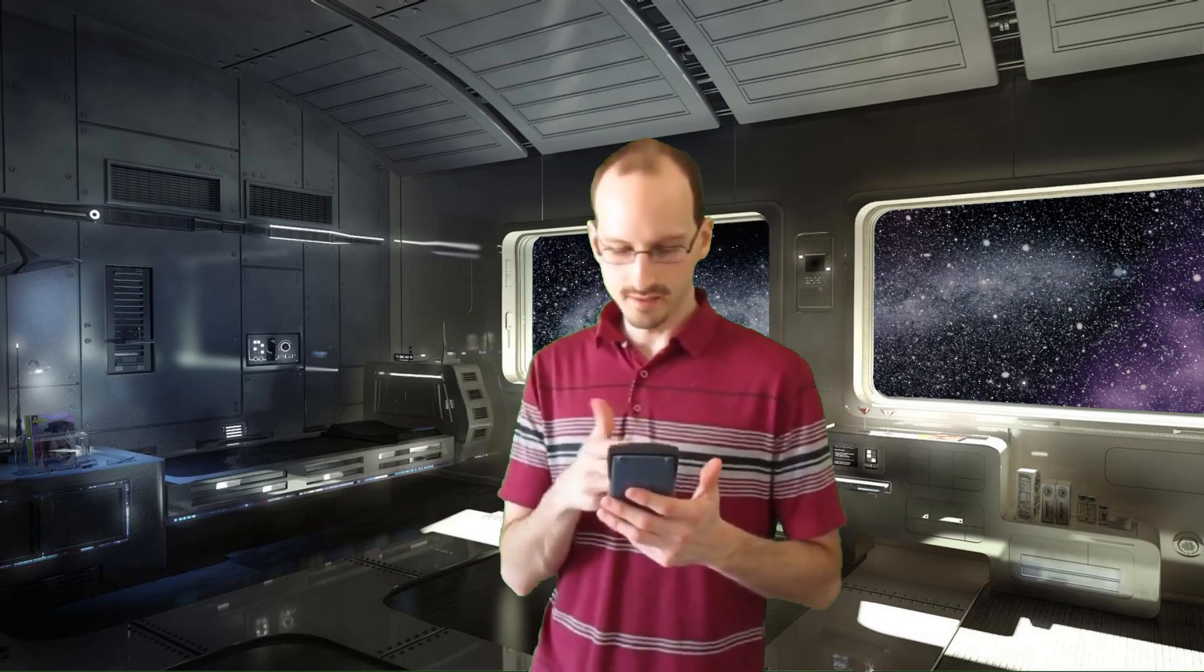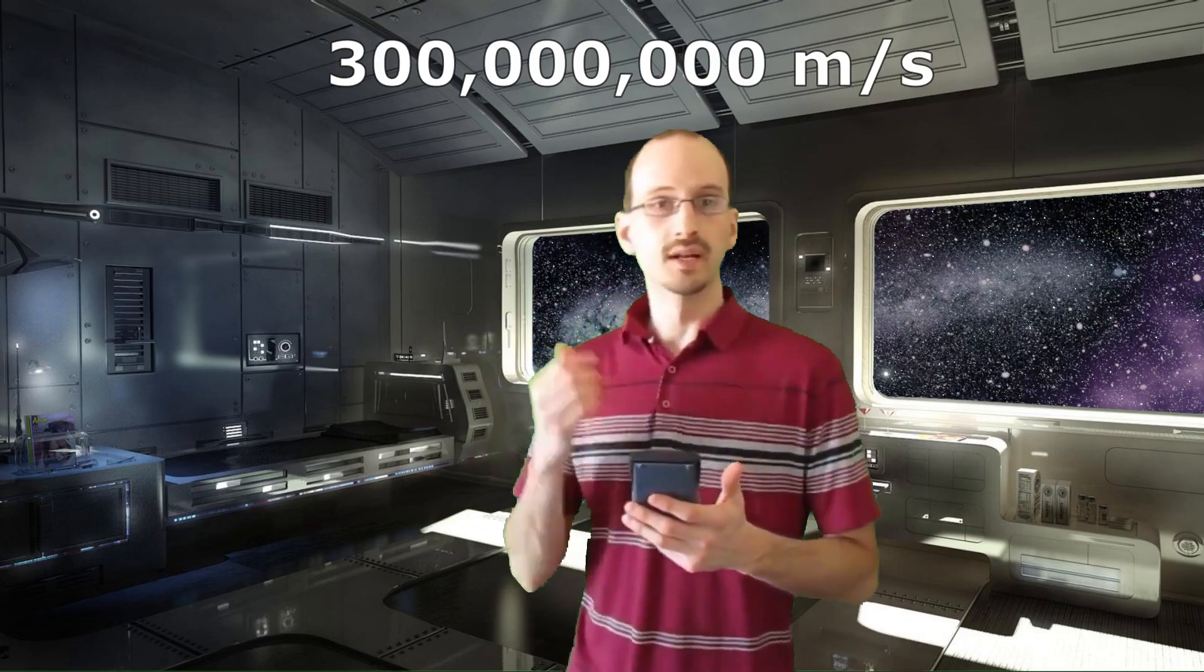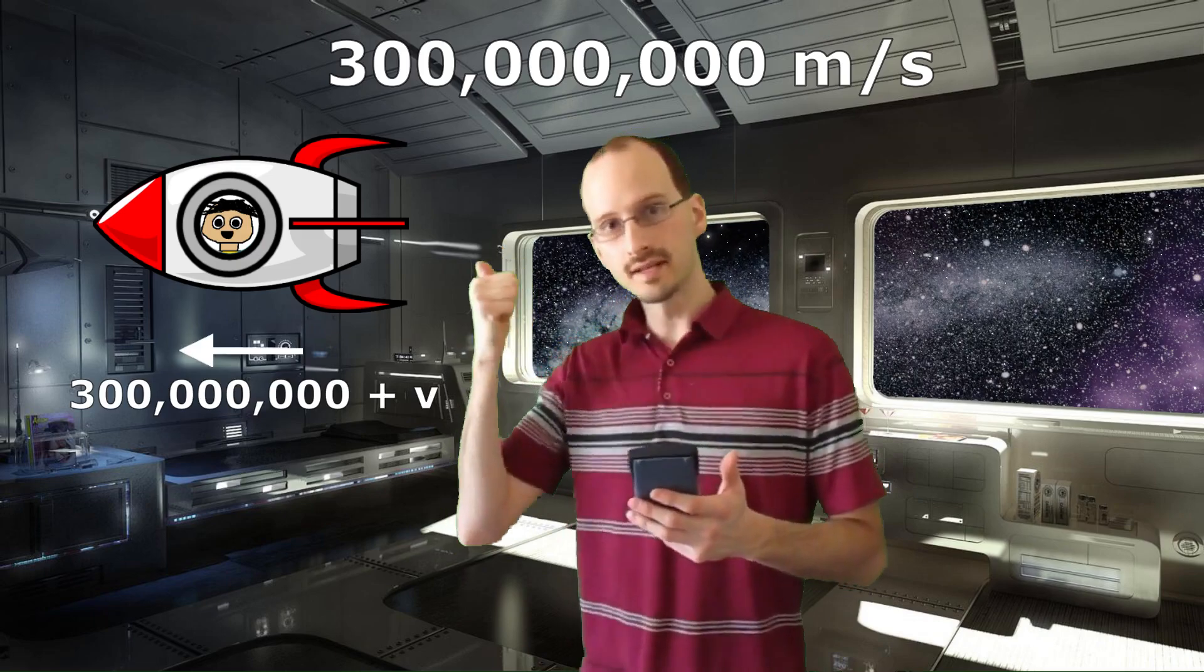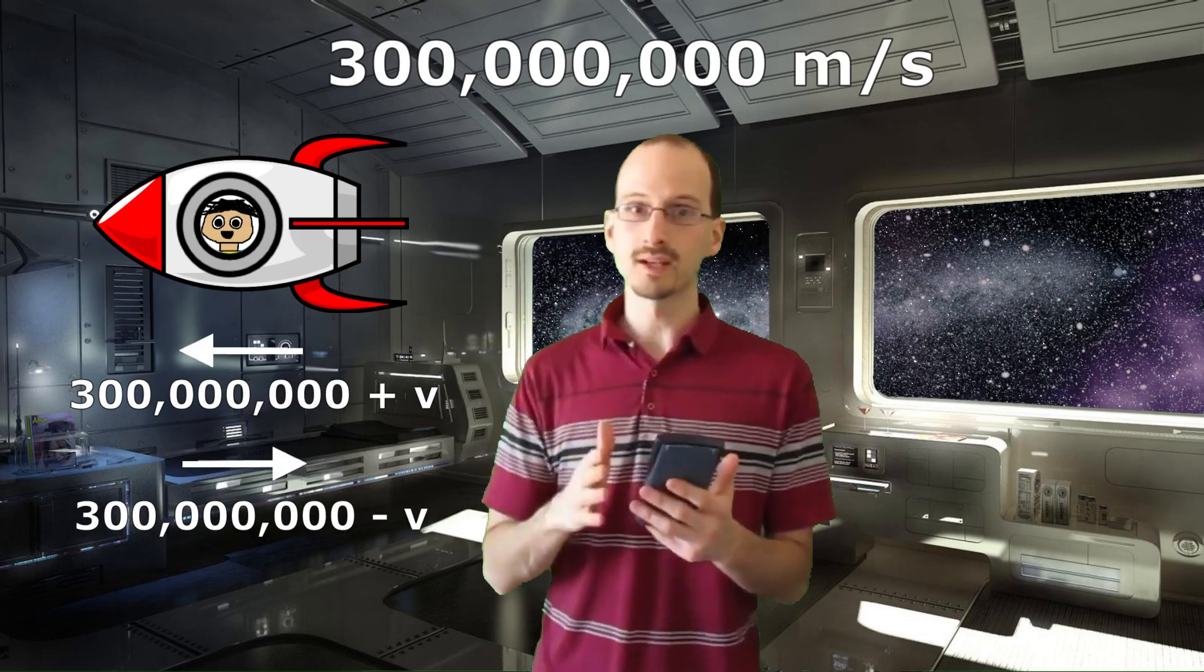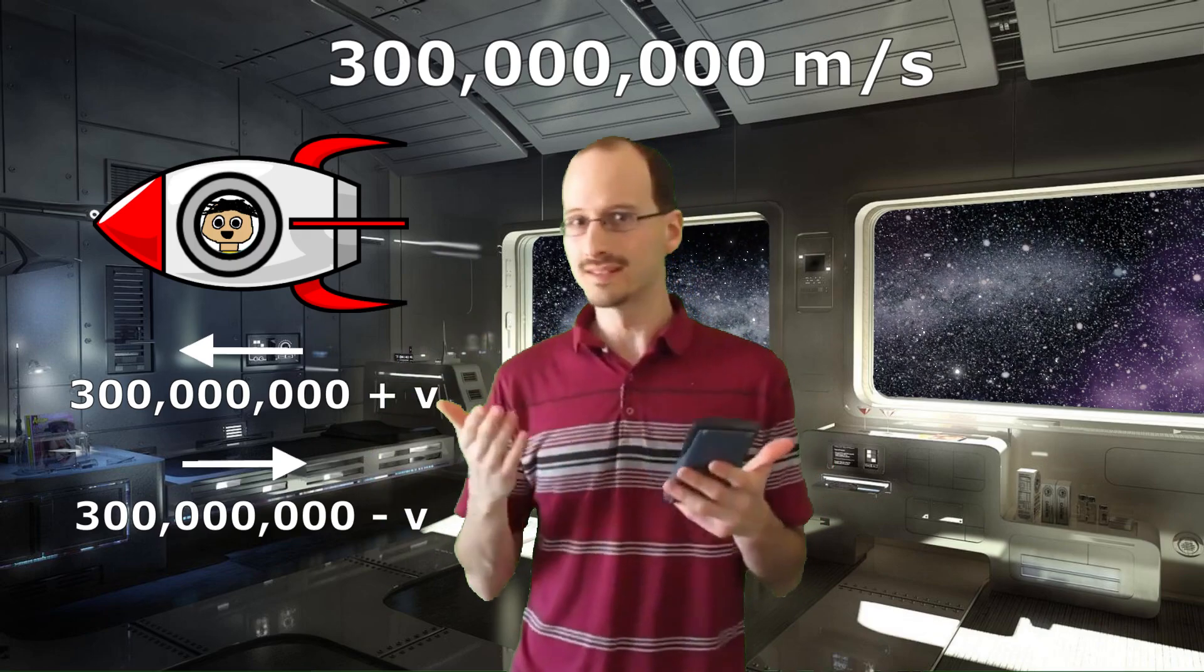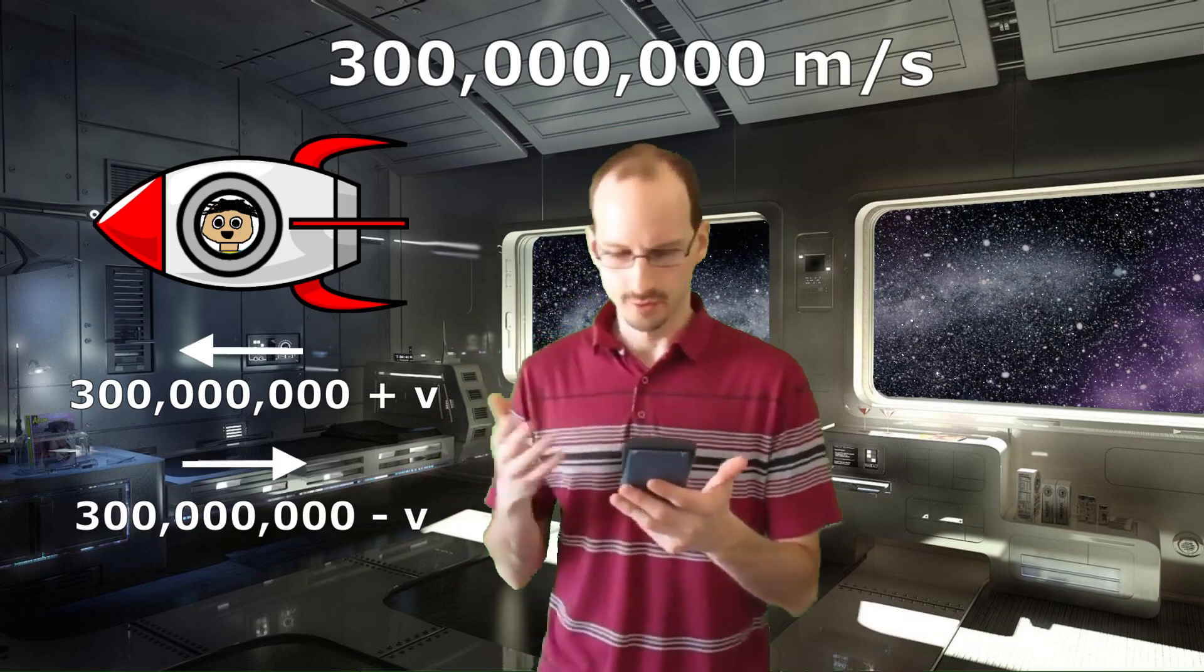My detector and Lampson's disagree. Mine says the speed of light is 3 times 10 to the 8 in all directions. But his says the speed of light is 3 times 10 to the 8 plus his speed in that direction and 3 times 10 to the 8 minus his speed in that direction. Our measurements disagree. So who is wrong? Is one of our detectors broken?